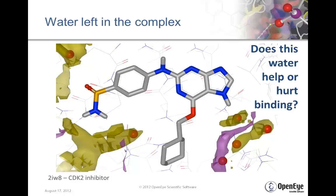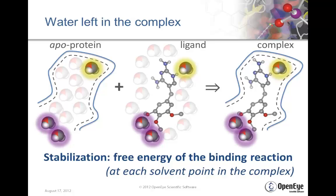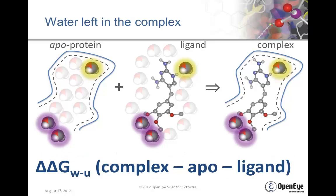What do we do about the water that is left in the complex after our ligand binds, and what can SHMAP tell us about that? Does this water help or hurt binding? The way we understand that is through a concept we call stabilization — basically the free energy of the solvent in the binding reaction. We calculate this by subtracting the free energy difference for the complex by the free energy difference for the APO and the ligand.